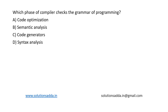This is a question from compiler: which phase of a compiler checks the grammar of the program? First of all, what is a compiler? A compiler is a software program that converts high-level source code written in a programming language into lower-level machine code that can be executed by computer hardware.